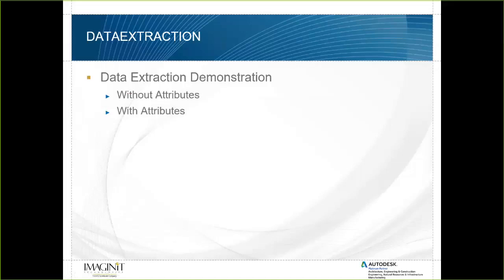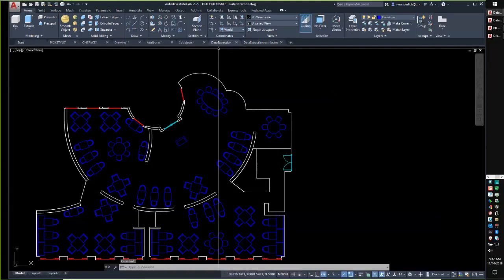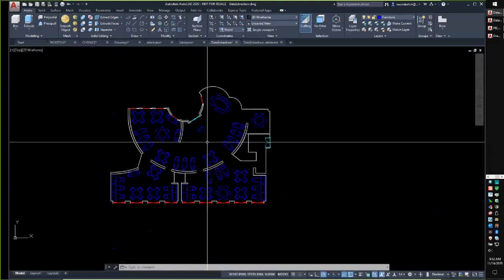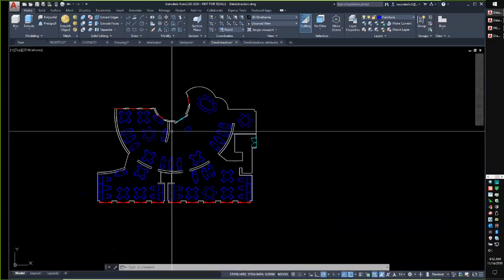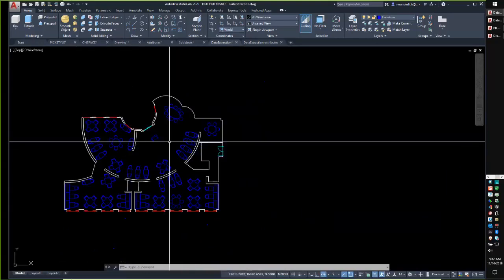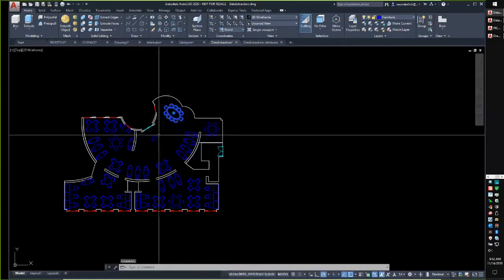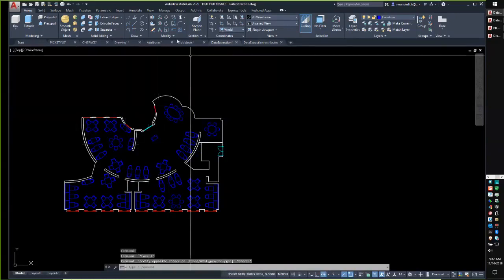Regarding dynamic blocks and data extraction: data extraction likely cannot key in on a view state of a dynamic block, though I haven't tested that recently. In the past, dynamic block view states did not appear. Now for the live demonstration: this drawing is a dining venue from a cruise ship with tables defined as blocks. We launch data extraction, create a new DXE file, include items from the current drawing, exclude XREFs, extract only from model space, and filter to blocks only.